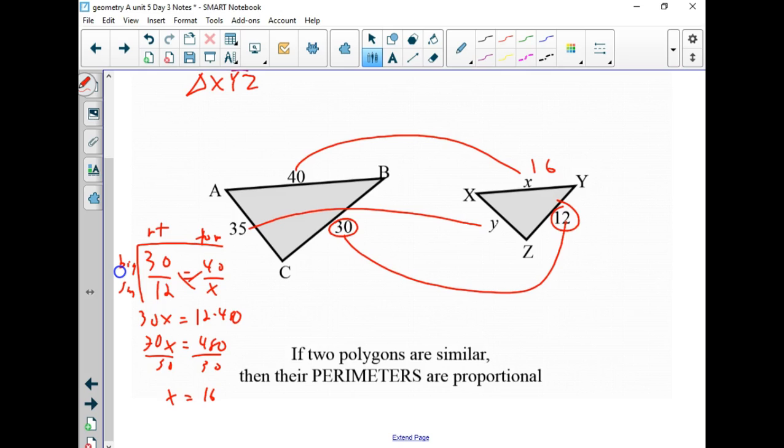And all we have to do now is we compare the ratios, you know, 30 and 12 divided by 6, that's 5 halves. Let's try with 40 and 16 divided by 8, 5 halves. So that is a constant 5 to 2 ratio. They are proportional. Now if you notice that the two polygons are similar, the perimeters are proportional.